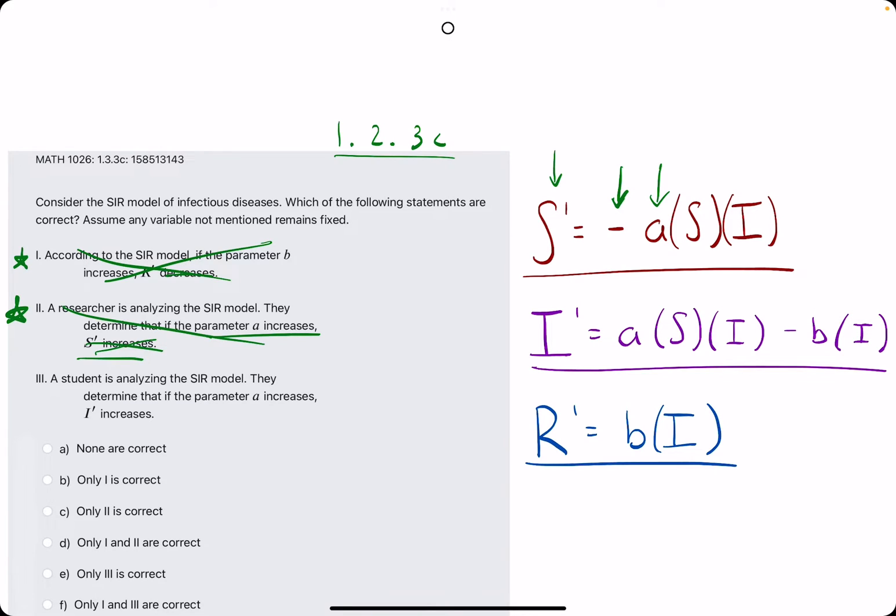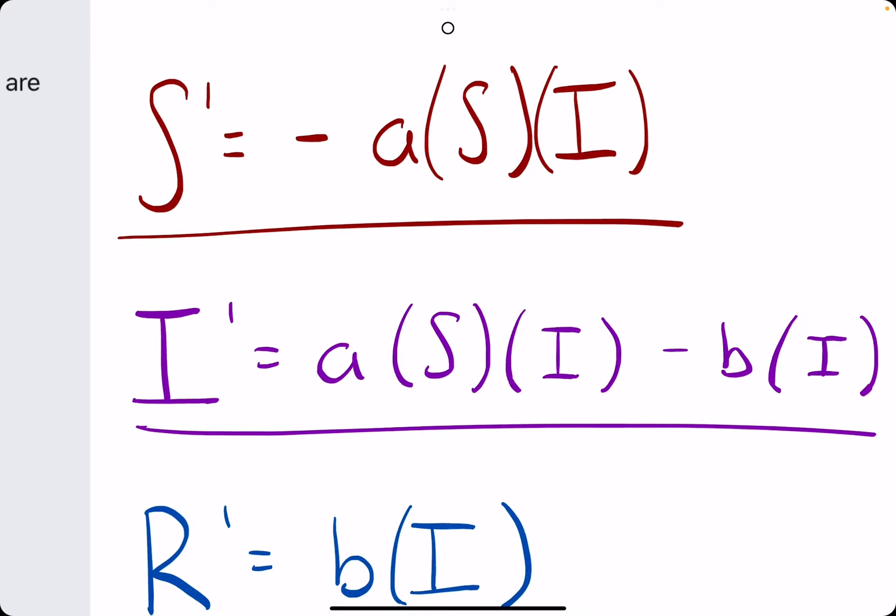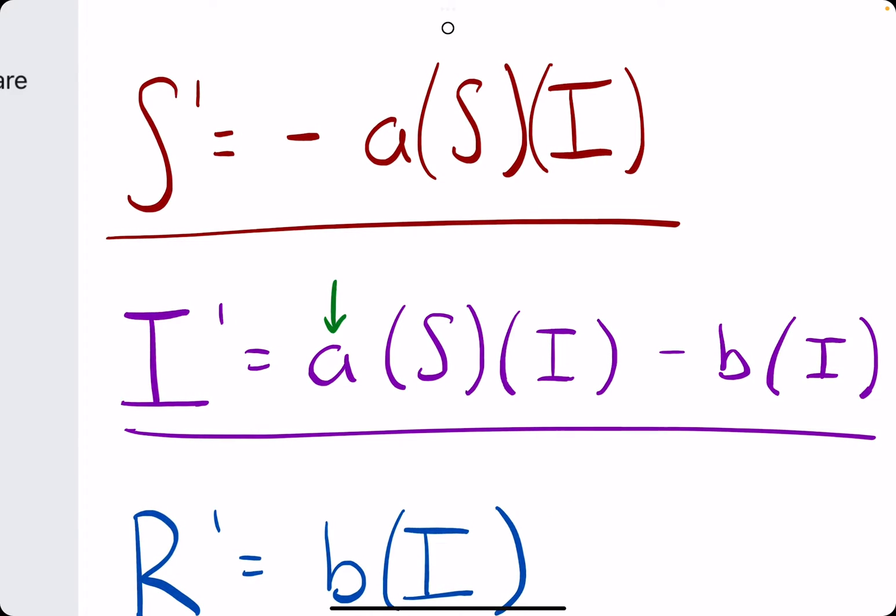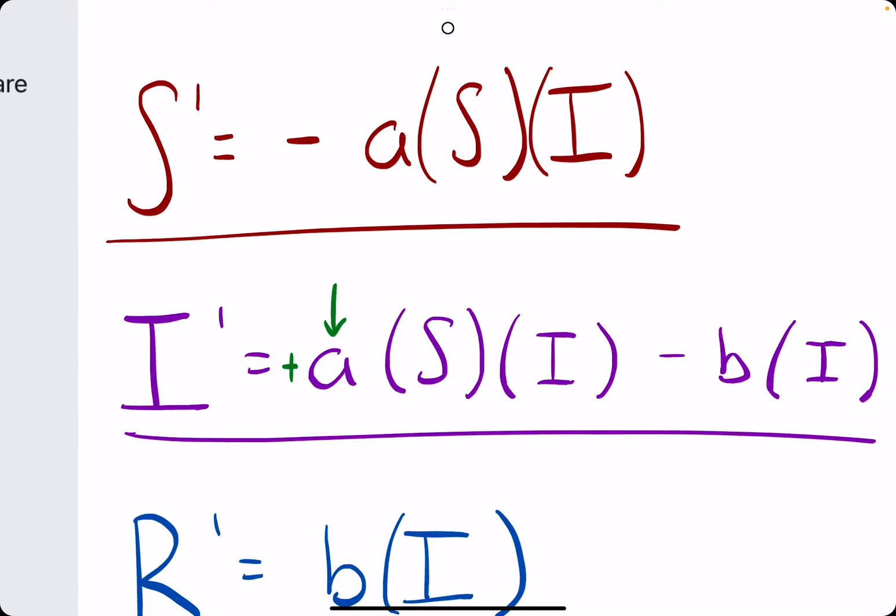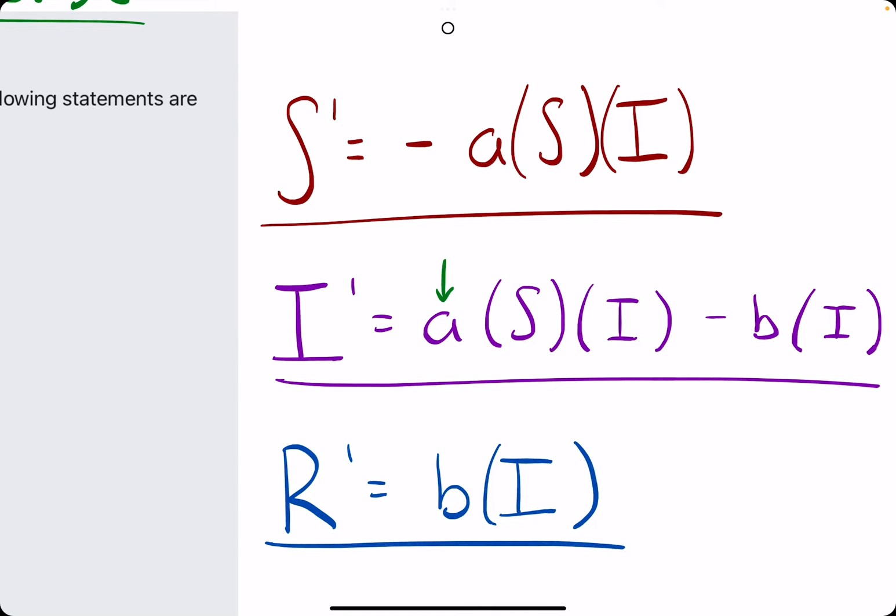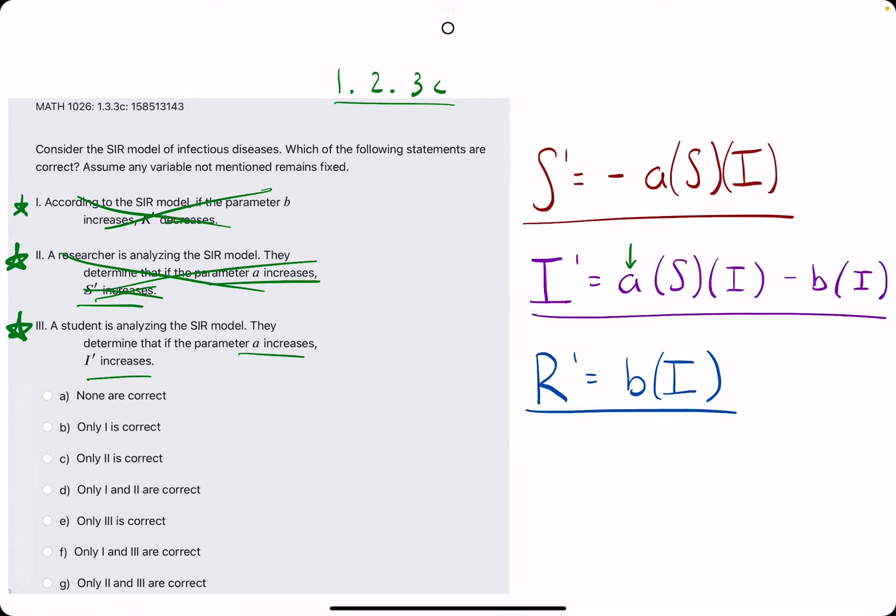Statement three says that if A increases, I' will increase. So instead of looking at S, we're looking at I' and analyzing what happens if A increases. The difference here with I' is that A in this case has a positive coefficient or no negative in front of it. So basically, if A goes up, then I' is also going up, which means I' should be increasing if A increases. So this one is actually true.